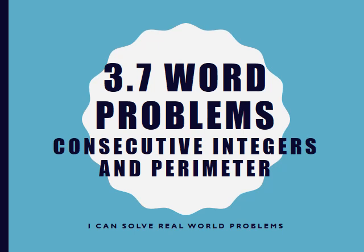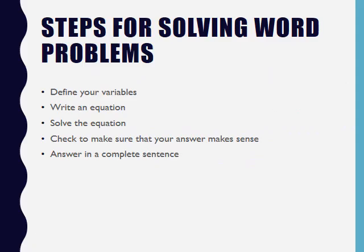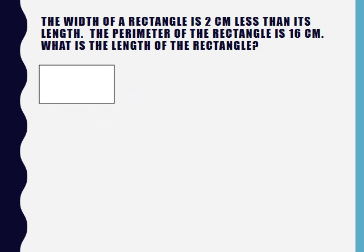Hey, today we're going to look at word problems, specifically consecutive integer problems and perimeter problems. Whenever you're solving word problems, you need to define your variables, meaning tell me what your variables represent. We're going to write an equation, solve that equation, check to make sure your answer makes sense, and answer in complete sentences.